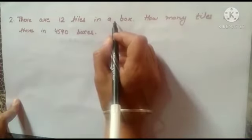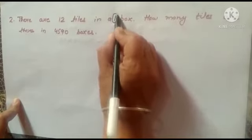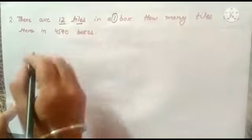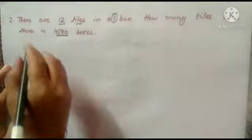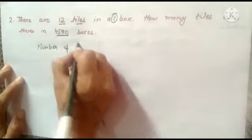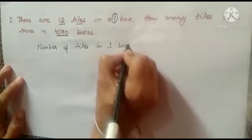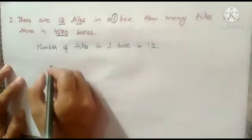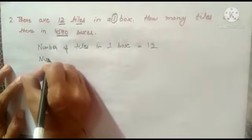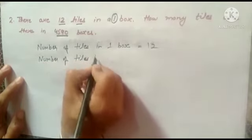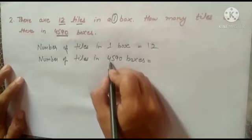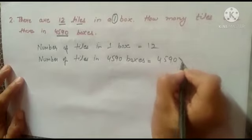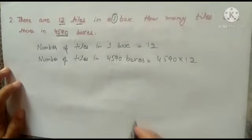If there are 12 tiles in one box, how many tiles will be in 4,590 boxes? Here also we will multiply because we need to find a larger number. Number of tiles in one box is 12. Number of tiles in 4,590 boxes — we need to multiply 4,590 by 12.